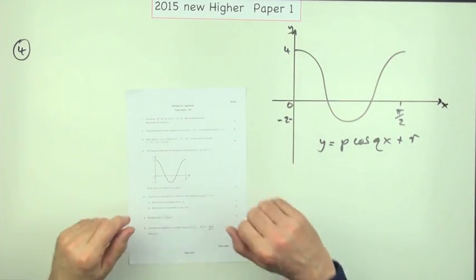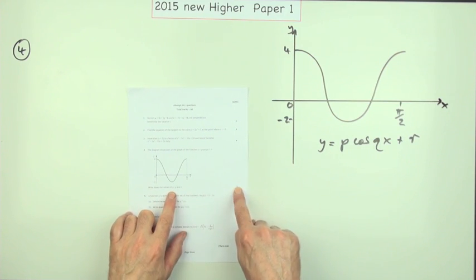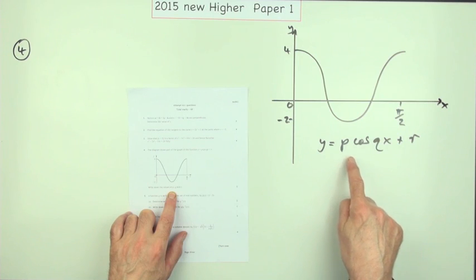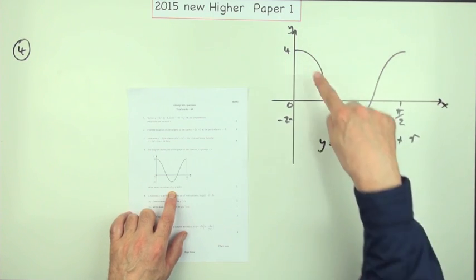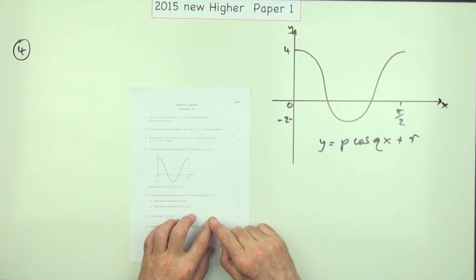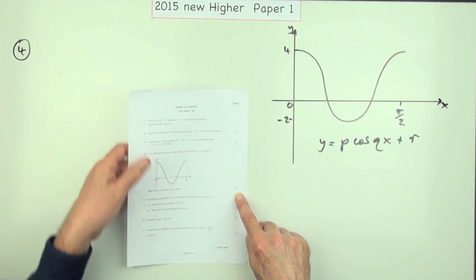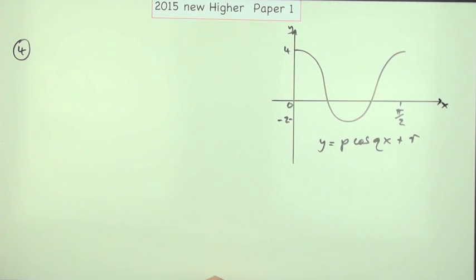So question four from the 2015 New Higher Paper 1. It's a three-mark question: write down the parameters for the equation of this trigonometric graph. That's four questions now and they've been really quite straightforward. That's 13 marks so far which have been quite easy despite what's been said about this exam.